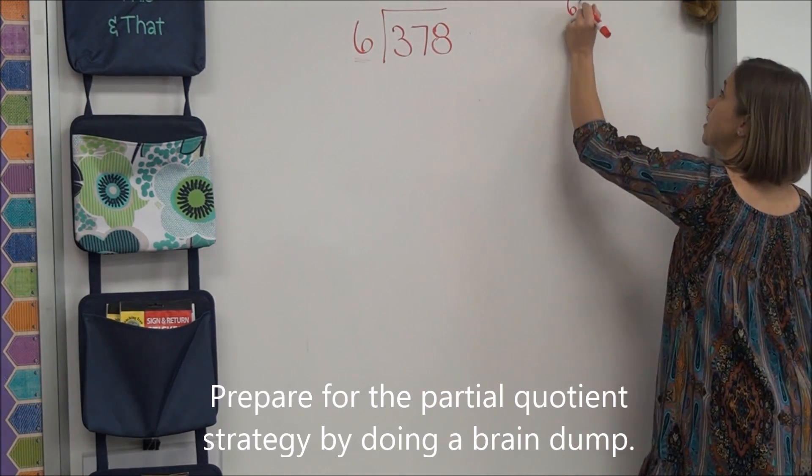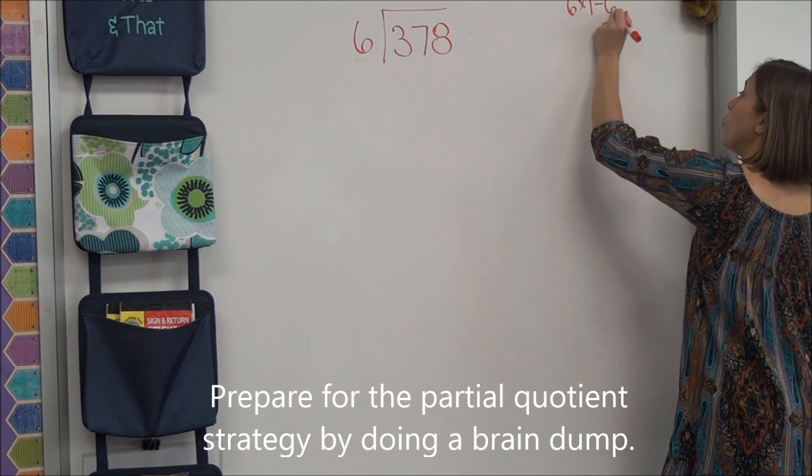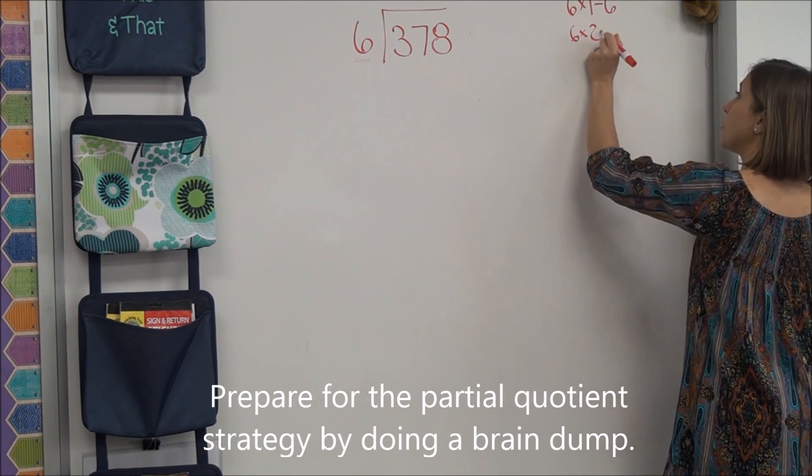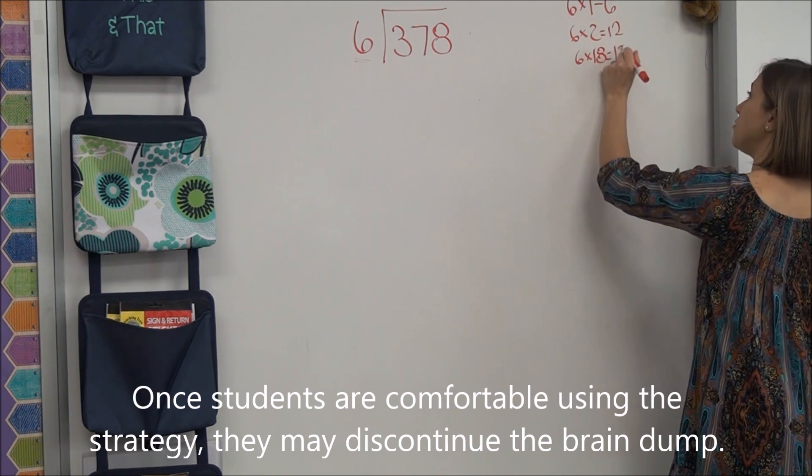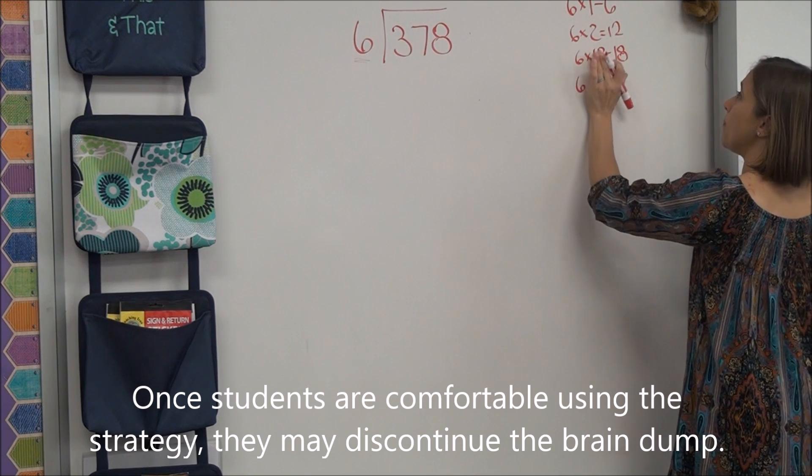What do we know about 6? What is 6 times 1, everyone? 6. What is 6 times 2, everyone? 12. What is 6 times 3, everyone? 18. 18. You are too fast for me. I'm a little slow.